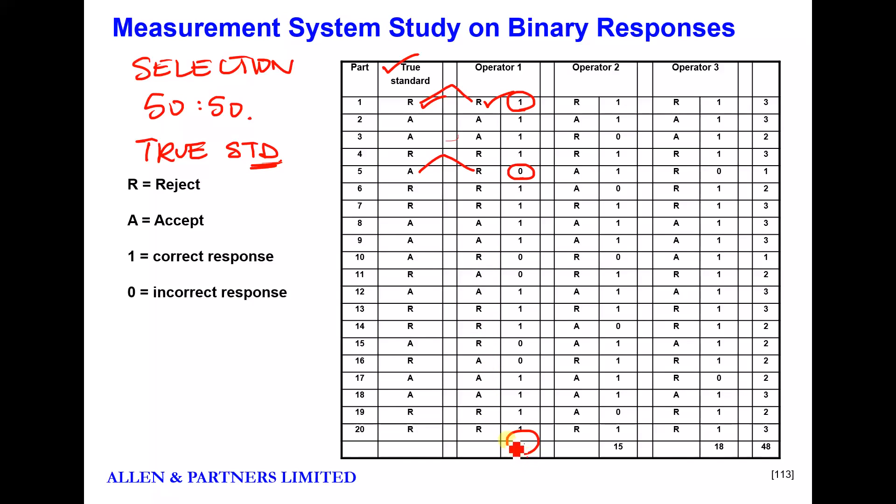Very simply, all we're going to do as part of the MSA is assess how many did they get right as a percentage. This system got 15 out of 20, which is 75% correct. That is known as the effectiveness of this measurement system. Simply what we're looking to do is achieve 80% or more.